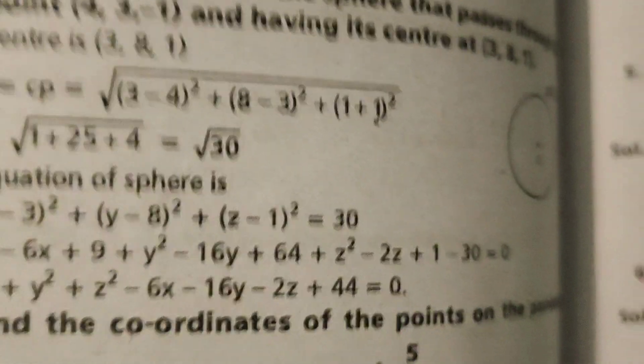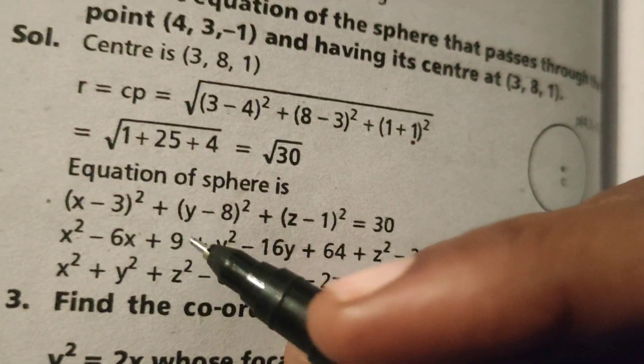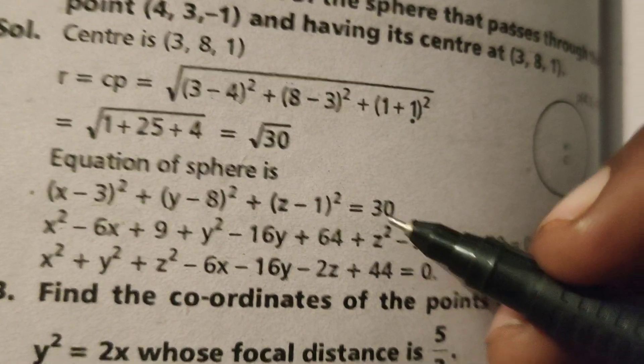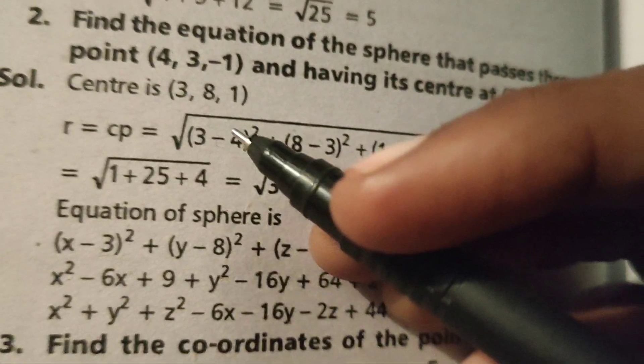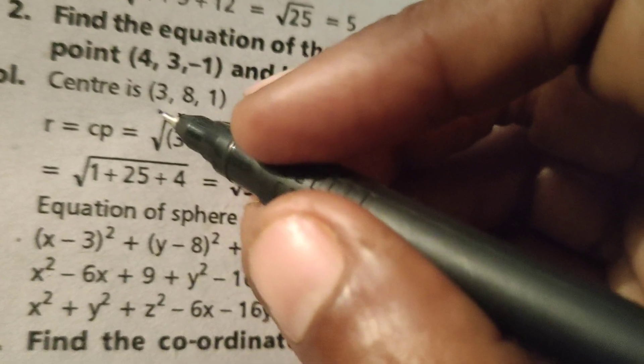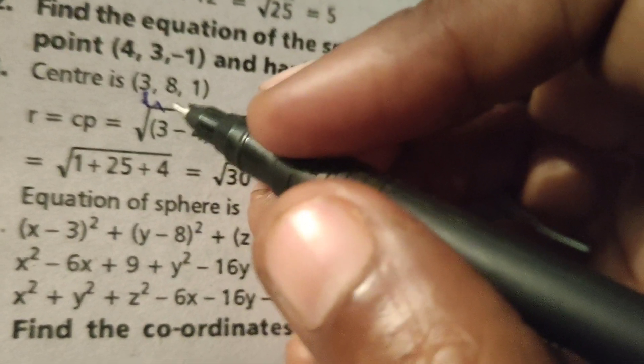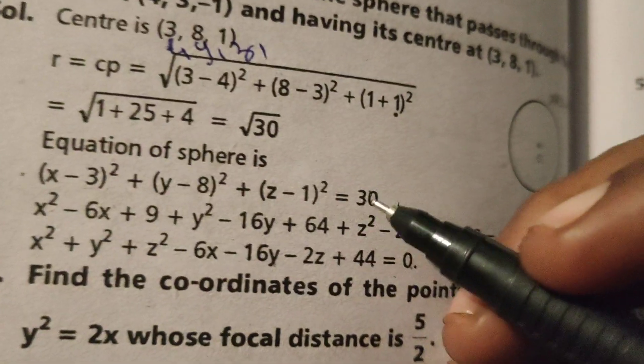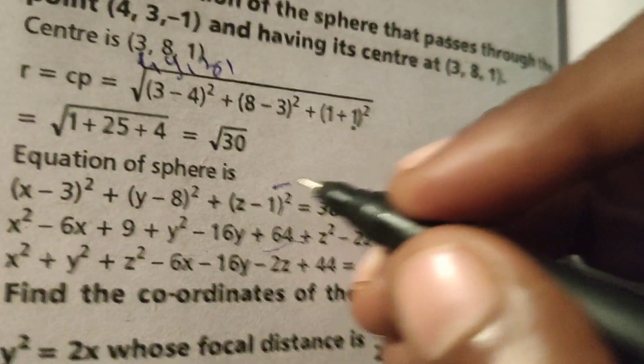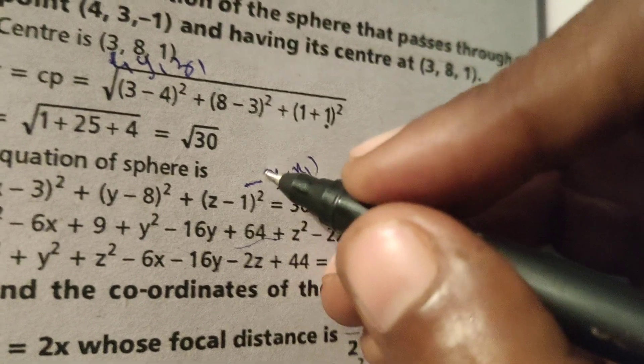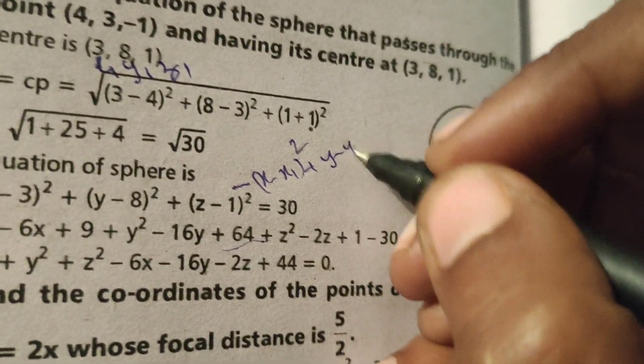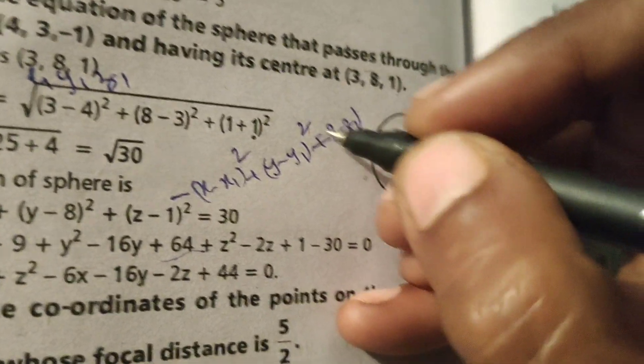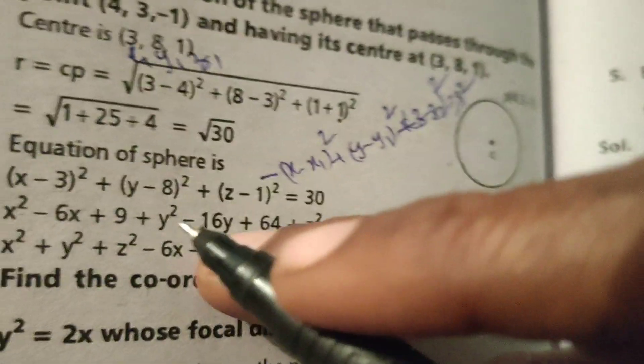So the equation of this sphere uses the formula (x - x₁)² plus (y - y₁)² plus (z - z₁)² equals r². Where x₁, y₁, z₁ are the center coordinates (3, 8, 1).